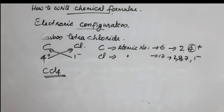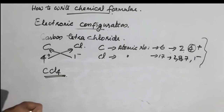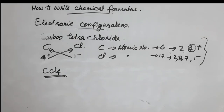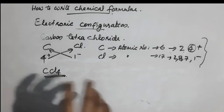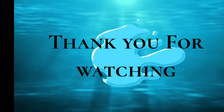So we can find the valency, the atomic number, the electronic configuration, and the atomic mass. Using all of these, we can determine the atomic number, valency, and write the chemical formula — both for ionic and non-ionic compounds.